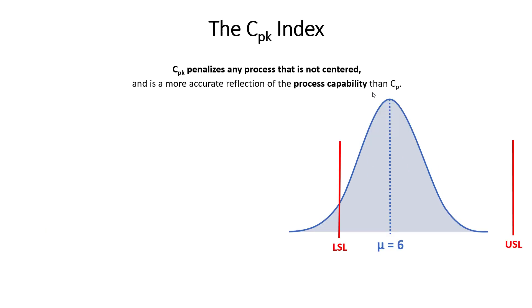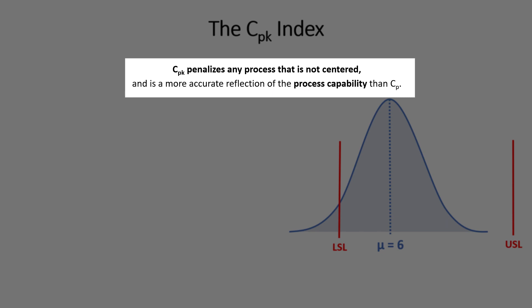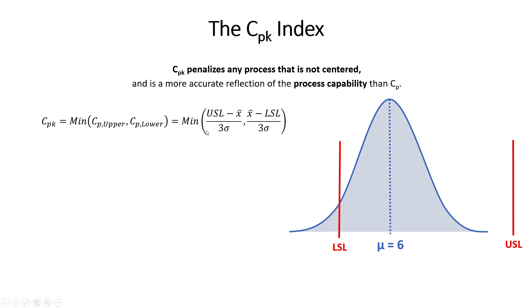This is why the majority of continuous improvement experts and quality engineers prefer the CPK index — it penalizes processes that are not centered and is a much more accurate reflection of true process capability. The CPK value is the minimum value between CP upper and CP lower. CP upper is the upper spec limit minus the mean divided by 3 sigma, and CP lower is the mean minus the lower spec limit divided by 3 sigma. Whichever is worse defines the ultimate process capability value.